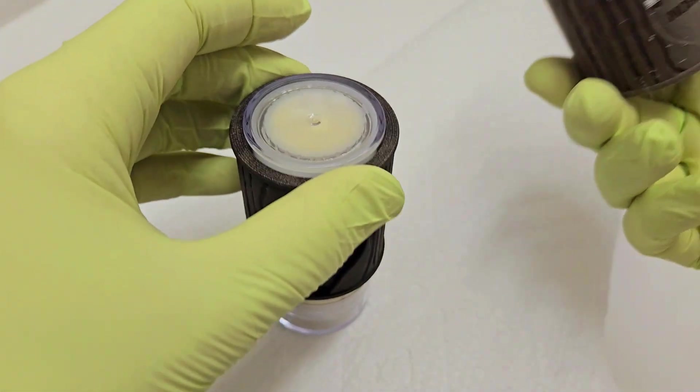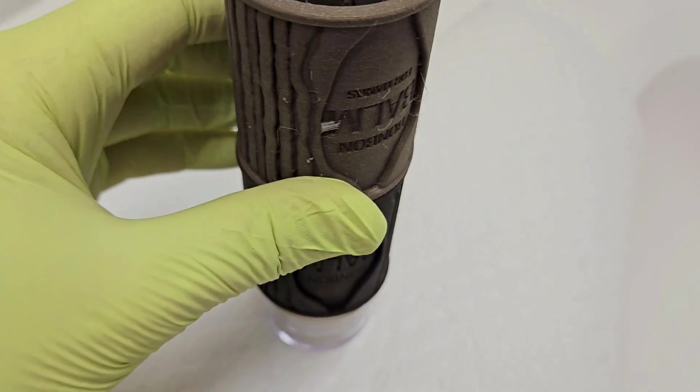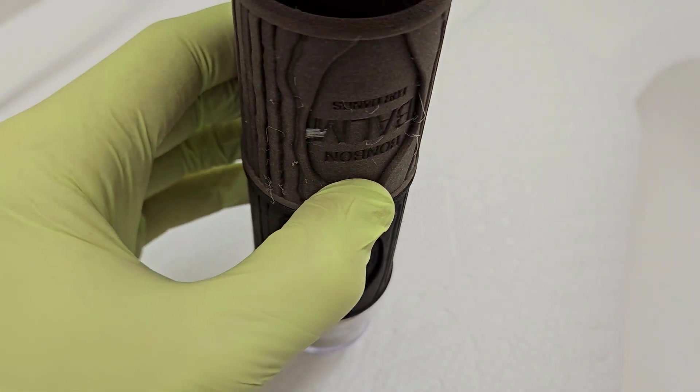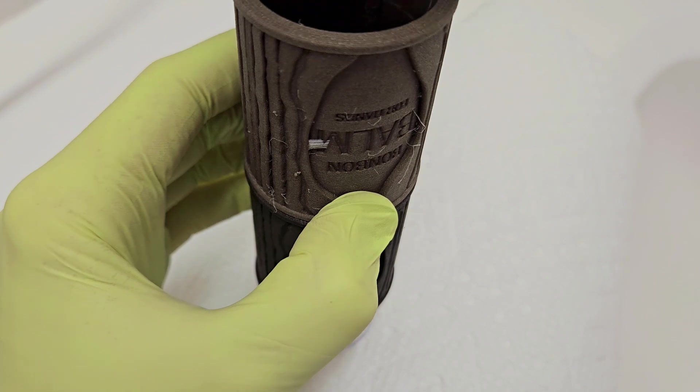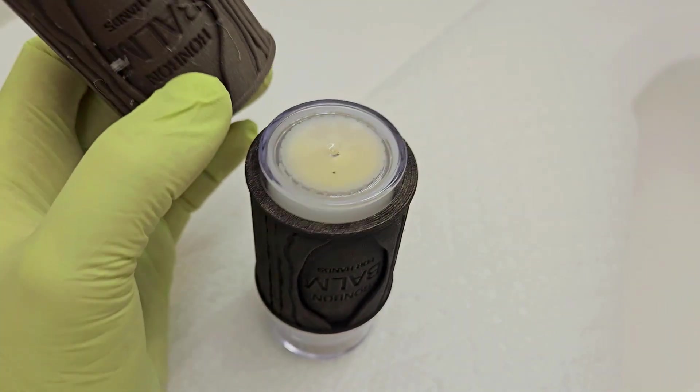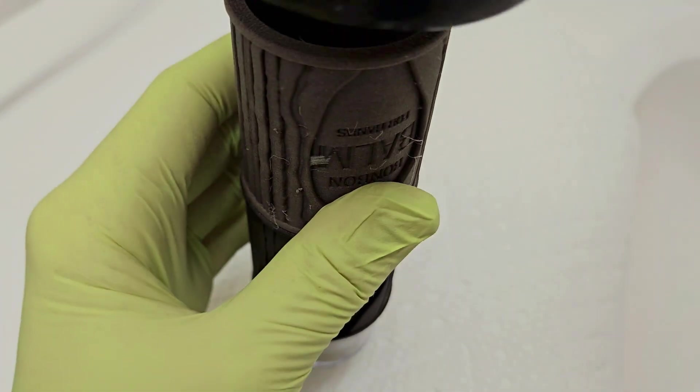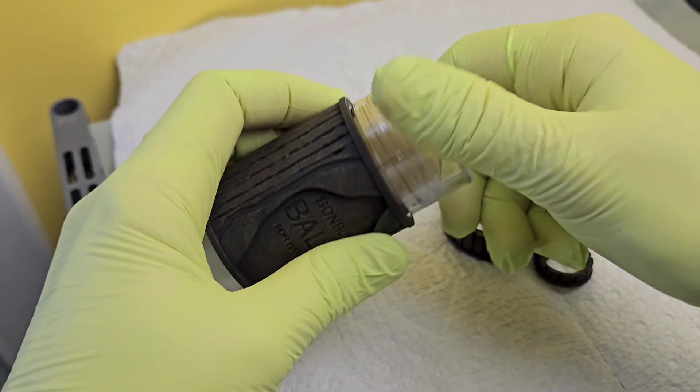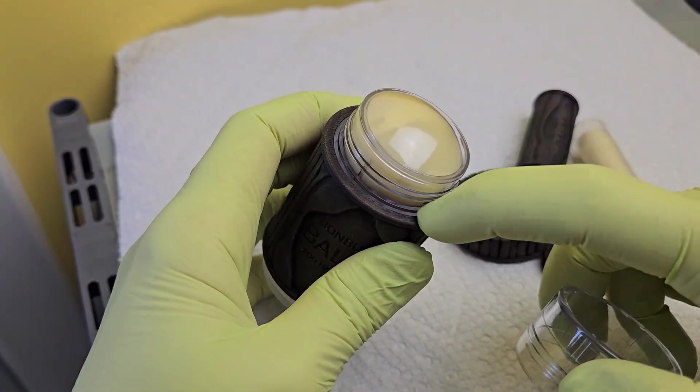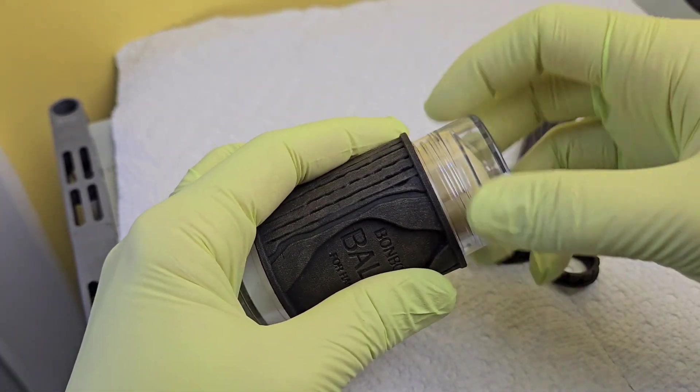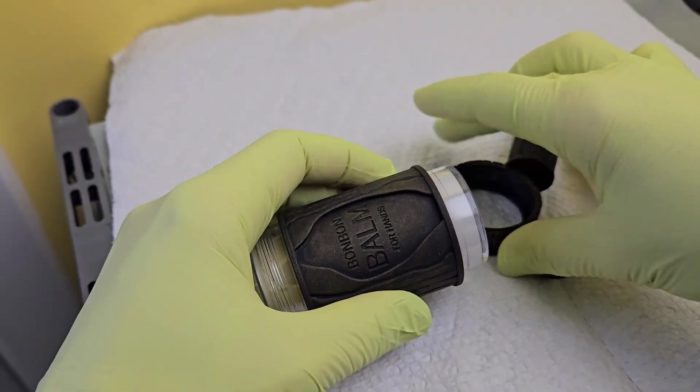Easiest way is just to take another one, set it on there, and use that to bang it down. That's perfectly aligned now with the ledge, so I know it's in the right position. Now I can add the bottom cap.